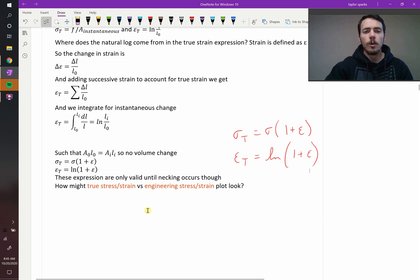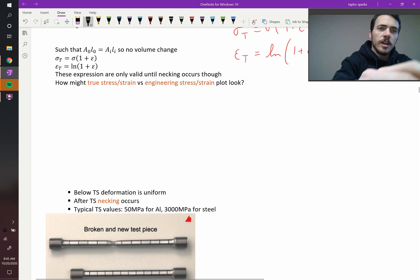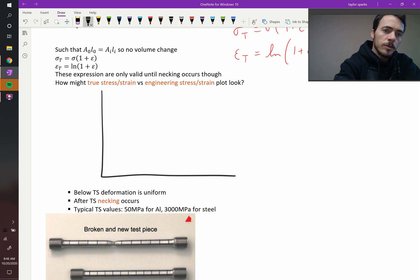So how would a true stress and strain plot look different than an engineering stress and strain plot? Again, engineering is when you divide it by your initial area, and true is when you divide it by the instantaneous area. So again, if we plot stress versus strain, we know what engineering stress and strain looks like. It goes up, it comes down, and then it breaks.